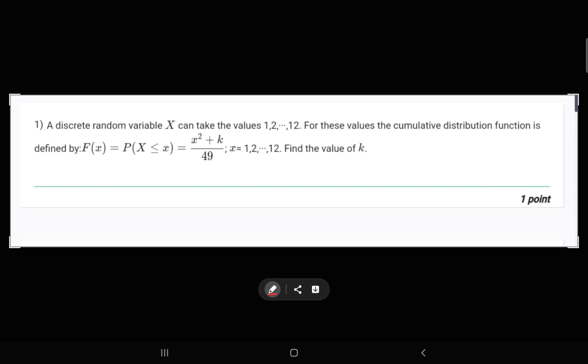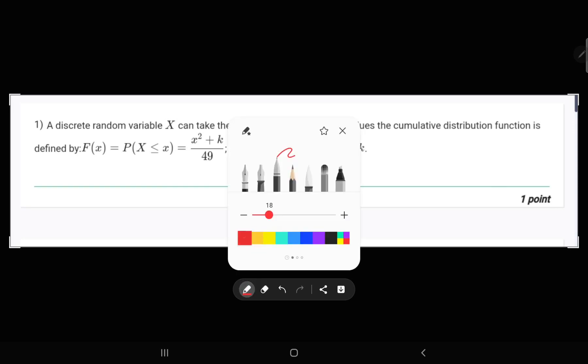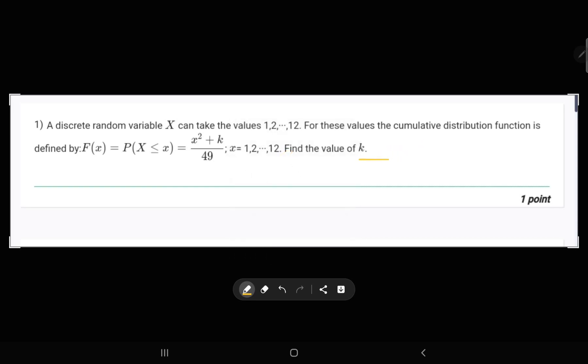First we will understand what we mean by this. To draw this graph in a sophisticated manner, we will say F(x) for discrete x equals P(discrete x ≤ x).